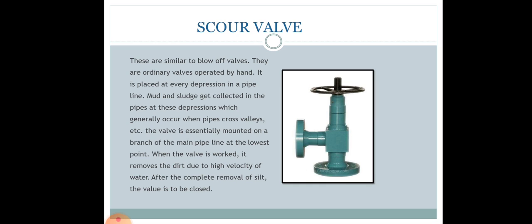Scour valves are similar to blow-off valves and are ordinary valves operated manually. They are provided at every depression in a pipeline, where mud and sludge tend to collect — especially where the pipe crosses a valley. This valve is mounted on a branch of the main pipeline at the lowest point, and when operated, the high velocity of water removes the accumulated dirt. After complete removal of the silt, the valve is closed.